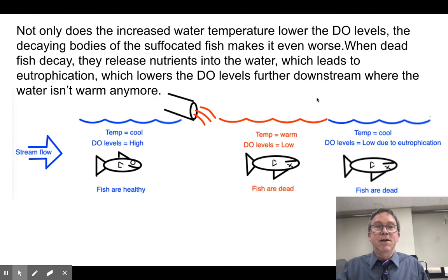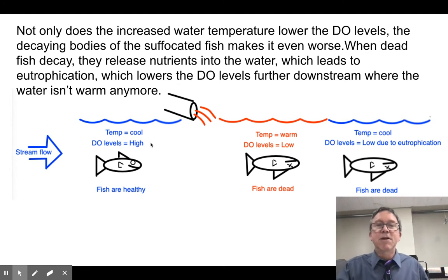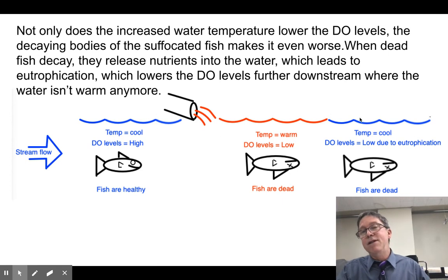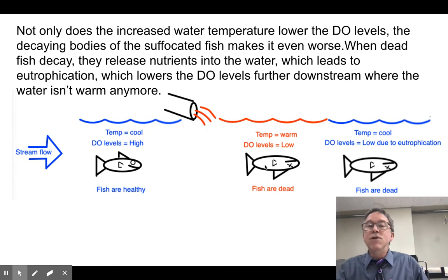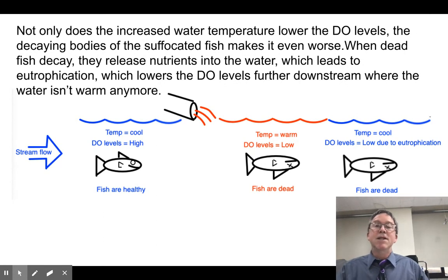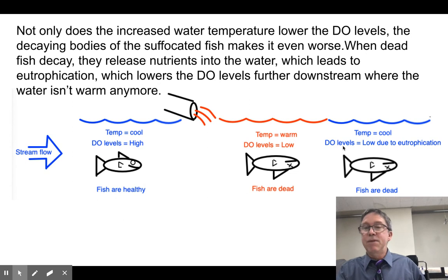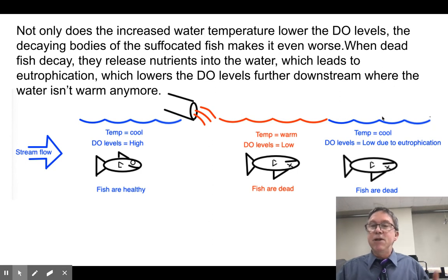It gets even worse. Once the hot water is dumped out, it will quickly come back up to ambient temperatures — it won't travel too far downstream before the temperature downstream equals what it was upstream. But the problem isn't done yet. When these fish die, their bodies decompose, nutrients are released in the water, and you get eutrophication — algae blooms. The algae then dies, consumed by bacteria, and again you have low dissolved oxygen and more fish die. So even far downstream from these power plants, you have streams that don't support much animal life because we've disrupted oxygen levels and produced fish kills.